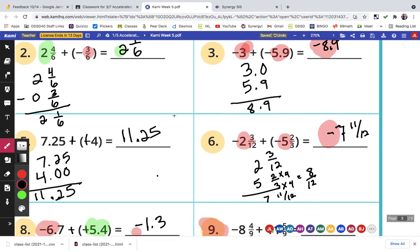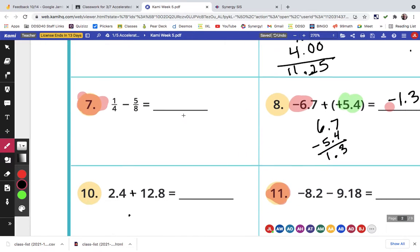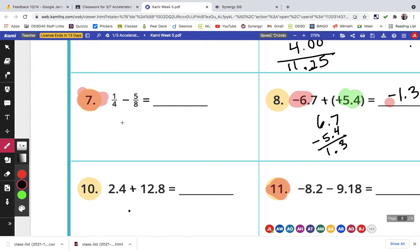The next one that was highlighted was 1/4 minus 5/8. So I'm going to take 1/4 and find an equivalent fraction of 2/8. So that becomes 2/8 minus 5/8. That is the same as 2 minus 5 over 8. 2 minus 5 is negative 3. So this is negative 3/8.